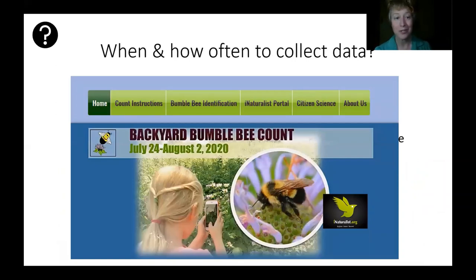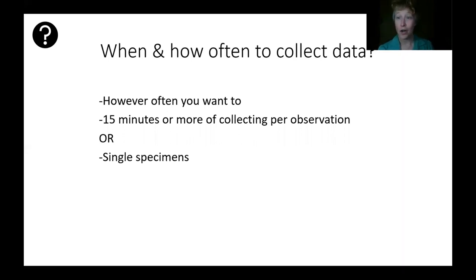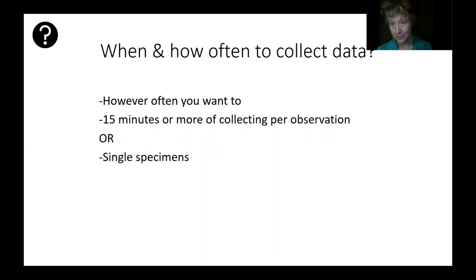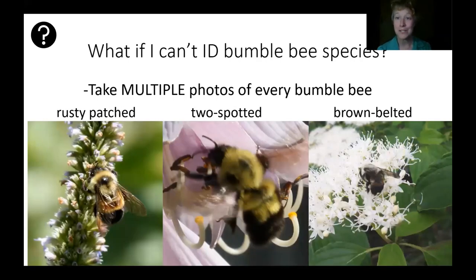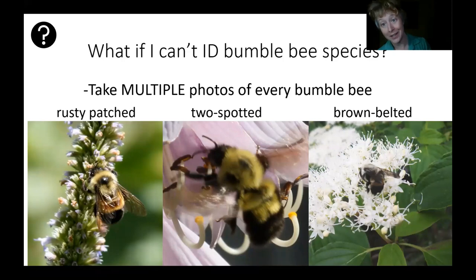We're looking for you to do this anytime you can, as often as you want, between July 24th and August 2nd. It's nice if the observation can be 15 minutes at a minimum, but some places may only make sense for 10 minutes. It can be longer — I've done some where I spend an hour at a site that really has a lot of flowers. You can also just take photos of single bees that you see and share those. If you can't ID a bumblebee species, don't worry about it — this is a challenging skill to gain. Just take multiple photos of every bumblebee you see, and the iNaturalist community will help identify those bumblebees.